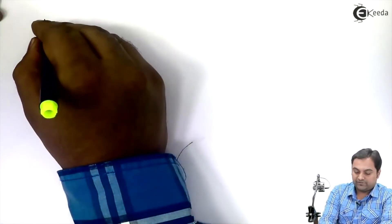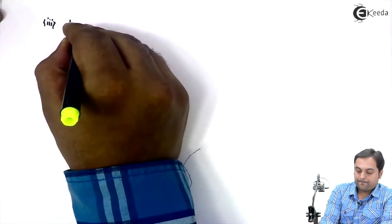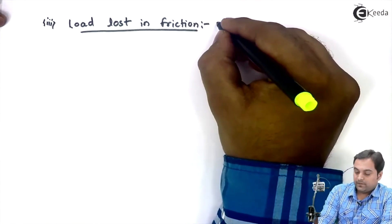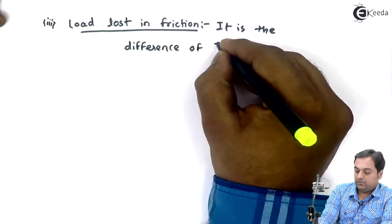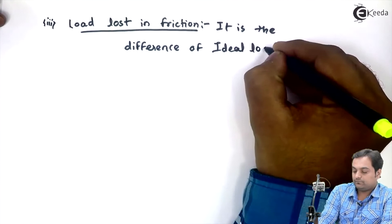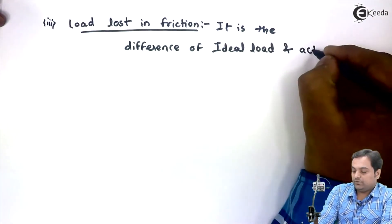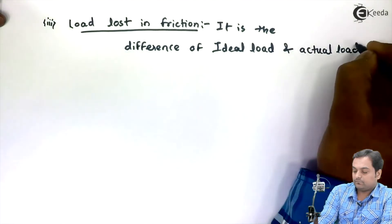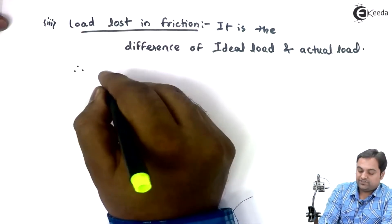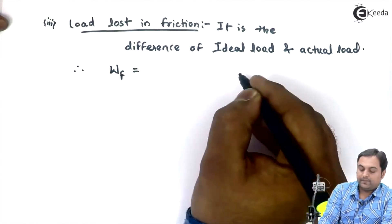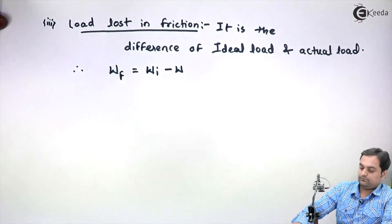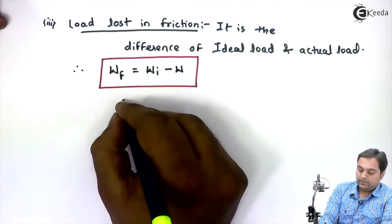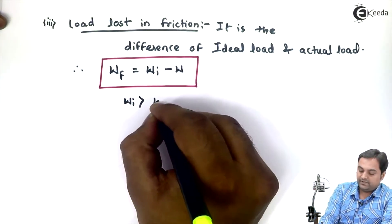The next definition is load loss in friction. Load loss in friction is the difference of ideal load and actual load. Therefore, load loss in friction is denoted by W suffix f, and it equals ideal load minus actual load. Here, ideal load is greater than actual load.